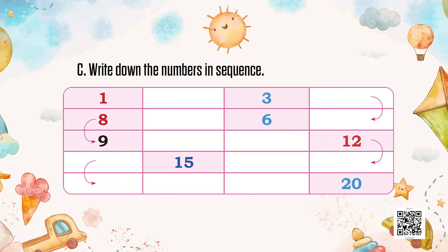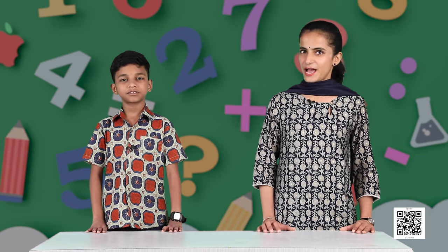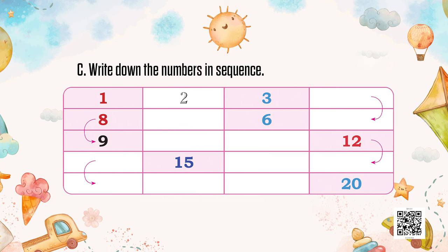Now we go ahead and see our sequencing box. Here we have the counting beginning from 1 and we have to complete the box till 20. I will count for some boxes and Arnav will help with the rest. Let us begin: 1, 2, 3, 4, 5, 6, 7, 8, 9, 10, 11, 12, 13, 14, 15, 16, 17, 18, 19, and lastly 20. Very nice, Arnav!